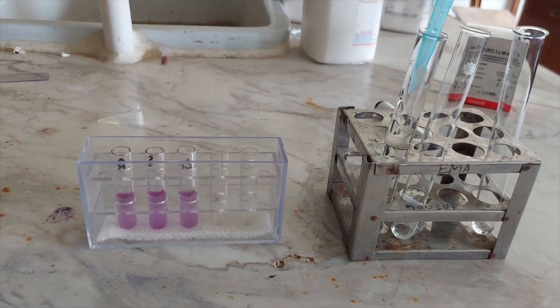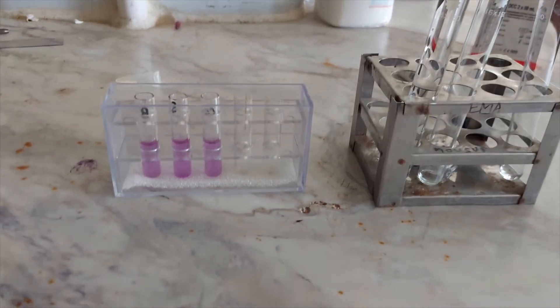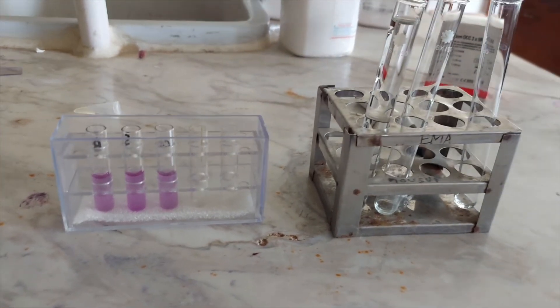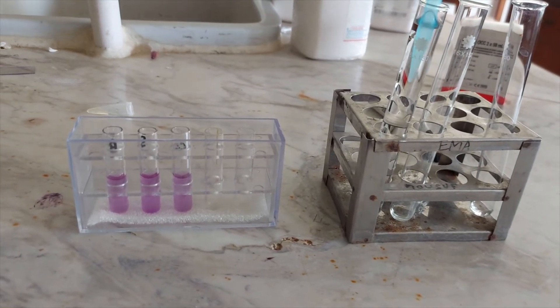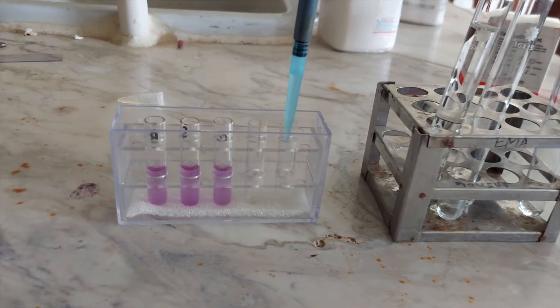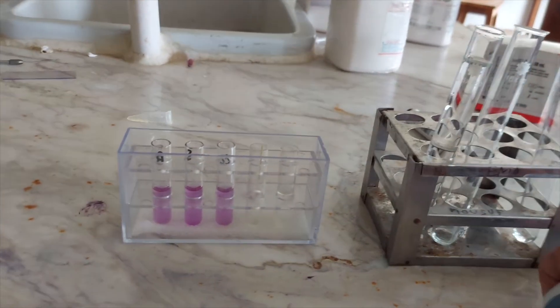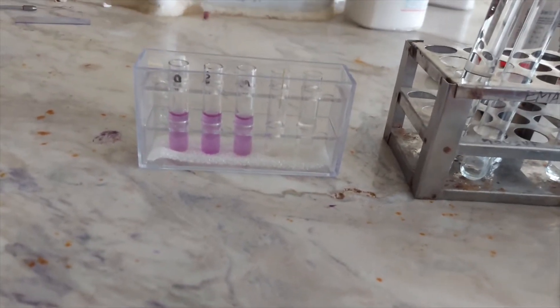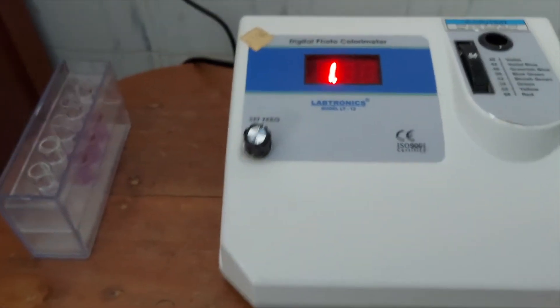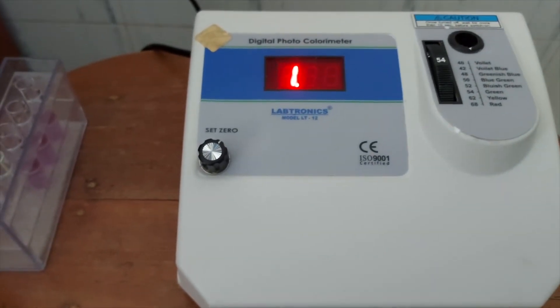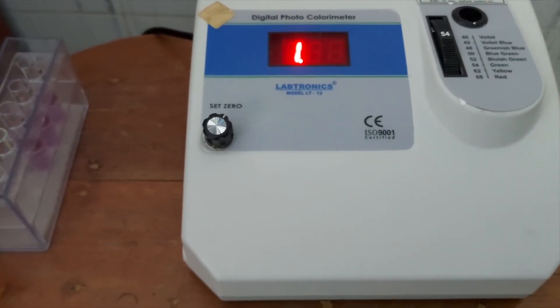In another cuvette, we are going to take distilled water for the calibration of the machine. We have to remember that this is a two-step calibration test, so we have to calibrate the machine first with distilled water and then with the blank reagent. Now we will leave the reagents for two minutes. In the meantime, we are going to turn the machine on and wait for five minutes as mentioned in the protocol.